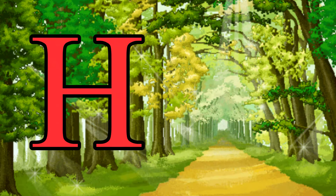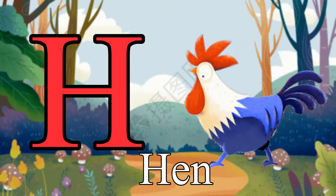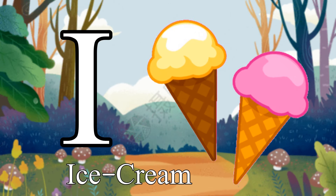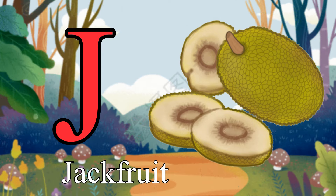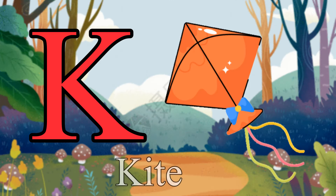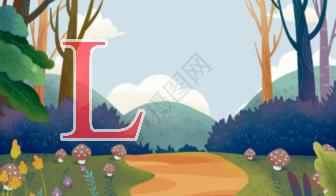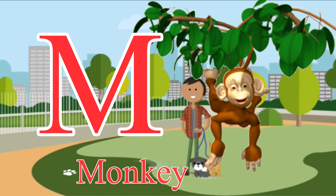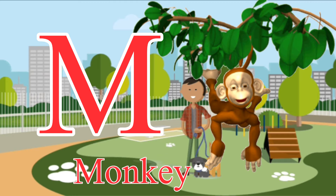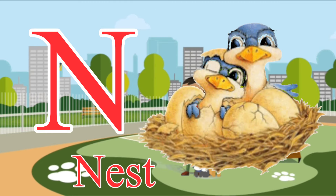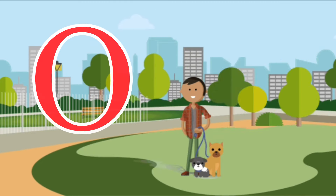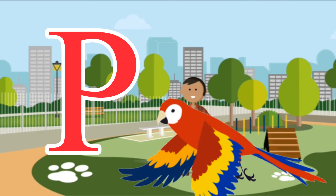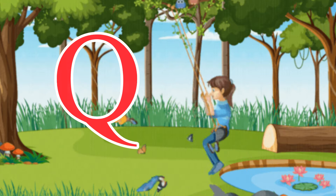H H for Hill. I I for Ice Cream. J J for Jack Fruit. K K for Kite. L L for Lion. M M for Monkey. N N for Nest. O O for Owl. P P for Parrot. Q Q for Queen.